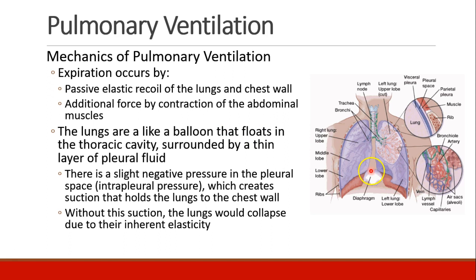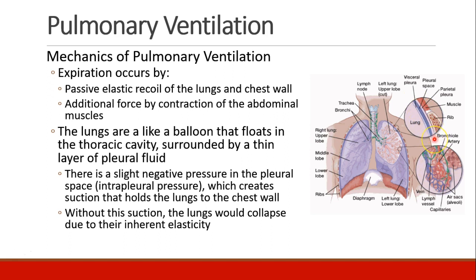You can think of the lungs like a balloon that floats inside the thoracic cavity, surrounded by a thin layer of pleural fluid. The lung has a pleural surface called the visceral pleura, and the chest wall has a pleural surface called the parietal pleura. In between is the pleural space, a virtual space with a slight amount of pleural fluid that allows the lungs to slide with little friction inside the thoracic cavity. The pleural space has a slightly negative intrapleural pressure, which creates a suction that holds the lungs to the chest wall.